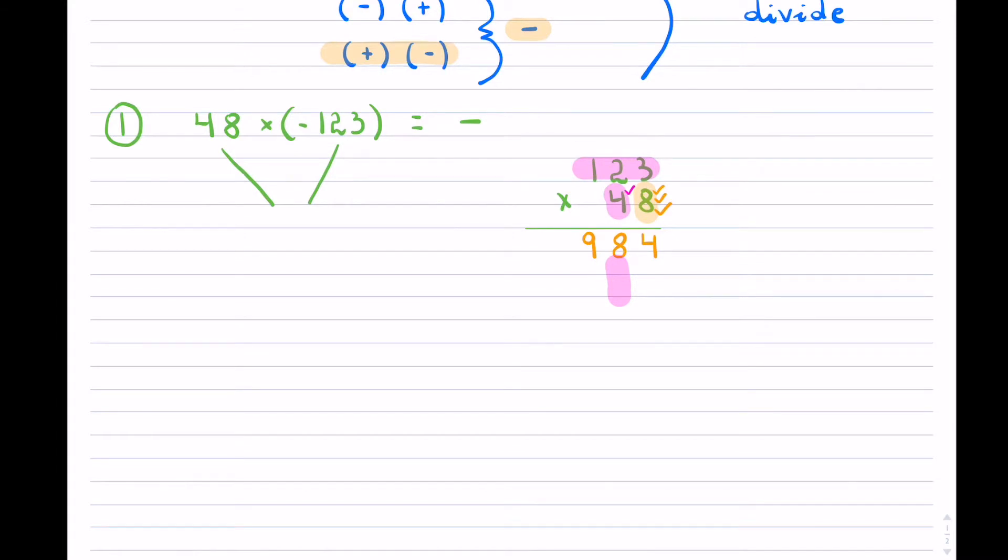I will start. 4 times 3, which is 12. Remember, you line it up in the place value. So that carries over the 1. And now, 4 times 2 is 8, plus the 1, which is 9. And then, 4 times the 1, which is 4. There was nothing carried over.